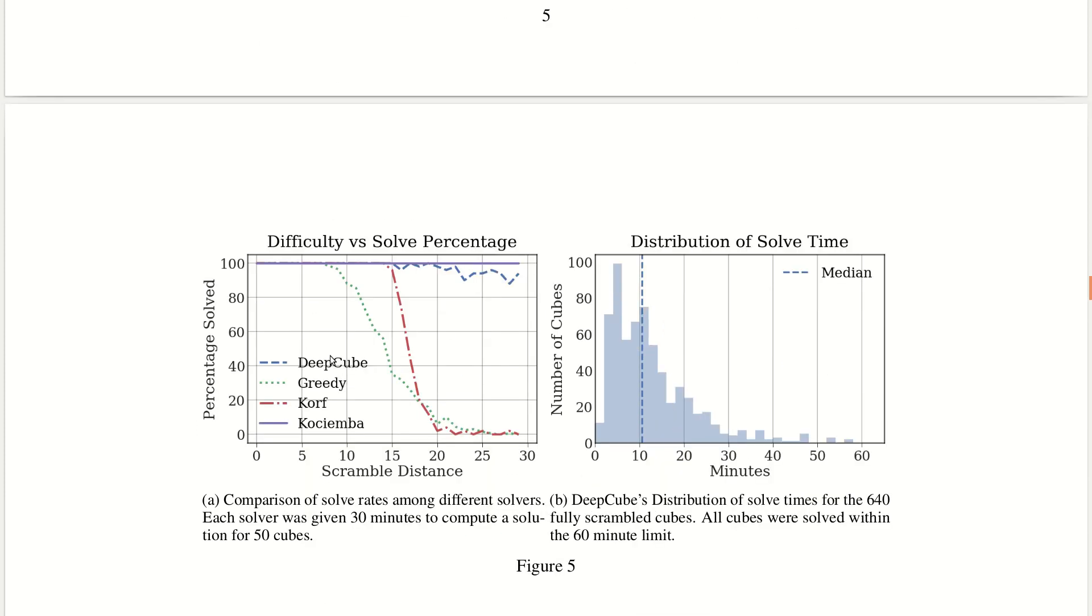This is the key result that they got. We already know Kociemba and Korf is a brute force approach. In reinforcement learning there are some policy algorithms which rely on greedy search. They have used just pure greedy and brute force it and they found that with pure greedy you get about 25 moves as the lower bound. With a brute force Kociemba you get 20 moves.